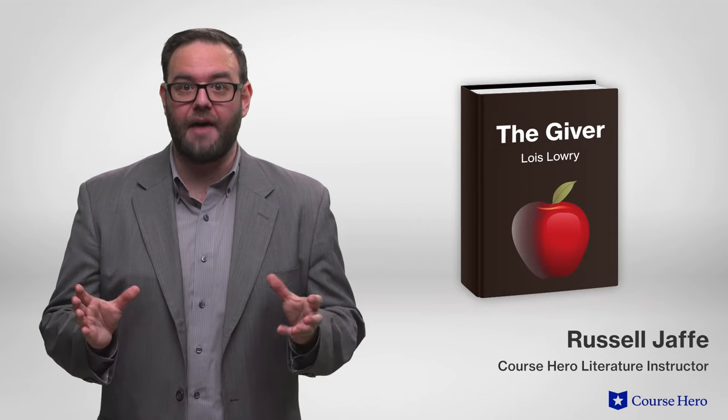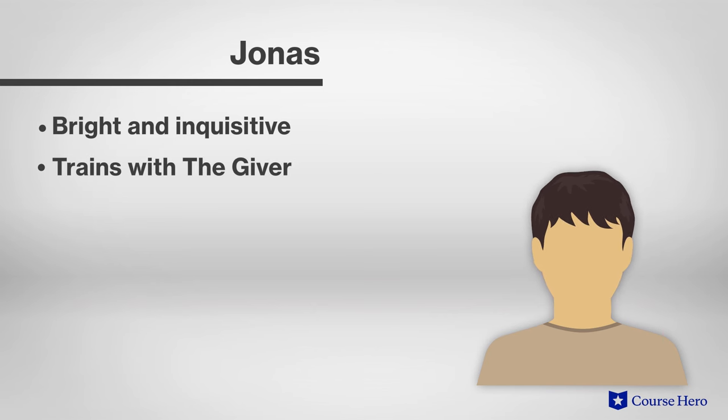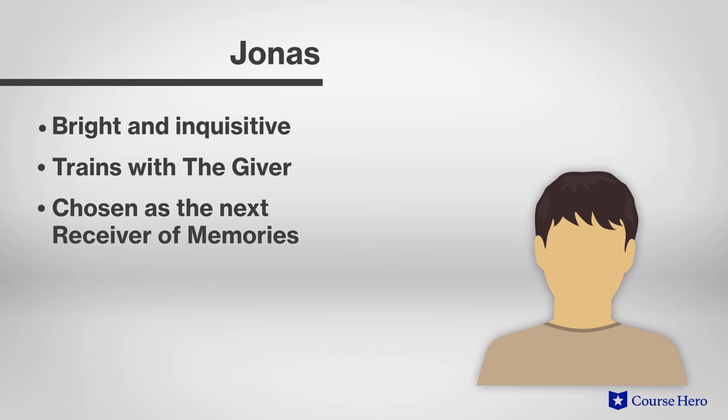There are three key characters in Lois Lowry's powerful novel, The Giver. Jonas begins the novel as a bright, inquisitive boy who's curious about what he observes, but who really doesn't question the overall structure or rules of the society he lives in. But once he begins training with The Giver, Jonas becomes aware of everything the community has sacrificed in order to avoid pain and achieve a tranquil, efficient way of life. They've relinquished all memories to the care of The Receiver because memories can cause suffering. Jonas becomes increasingly frustrated with his community and eventually angry at their willingness to settle for a bland, meaningless existence.